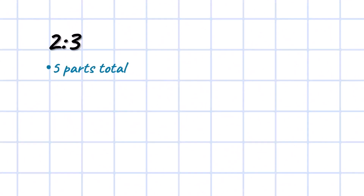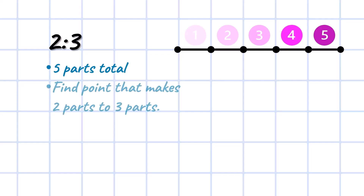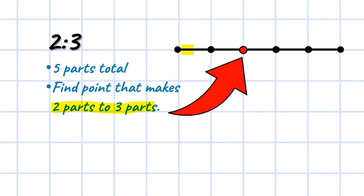Two to three — how many parts is that total? Well, that's going to be five. Two plus three is five parts. And we are looking for the point that divides this line so that we have two parts compared to three parts. That would be right here: two parts, three parts.